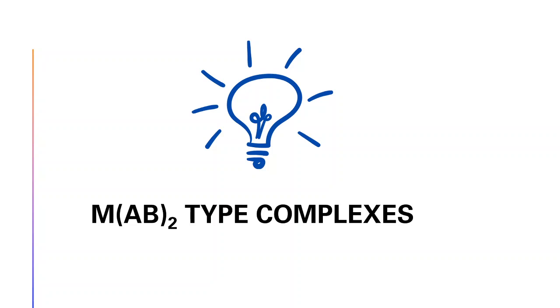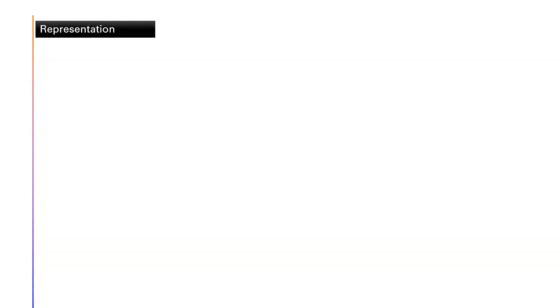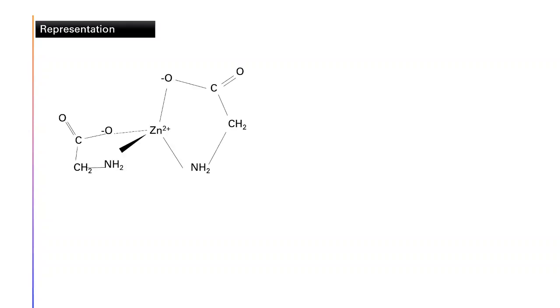A few days ago a student asked me this question: how many complexes are possible with the structure MAB₂? Let's take an example. Suppose this is a complex of Zn²⁺ with a ligand that is not symmetric but bidentate — this is the glycinato ligand.